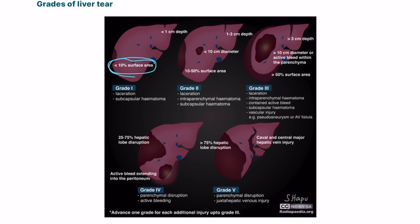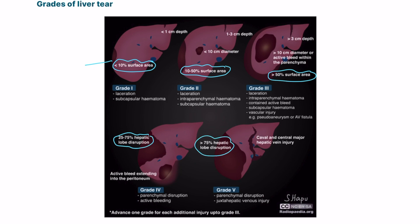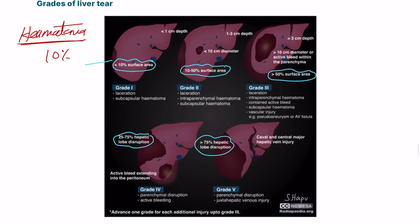For liver laceration grading, we assess two things: hematoma size as a percentage of the liver, and laceration depth in centimeters. For hematoma: less than 10% is grade 1; 10–50% is grade 2; more than 50% is grade 3; up to 75% is grade 4; and more than 75% is grade 5. These five grades are based on the proportion of the liver involved by hematoma.